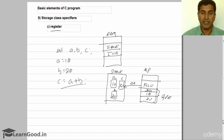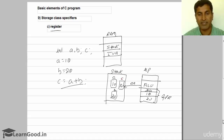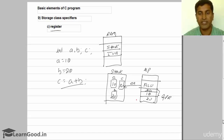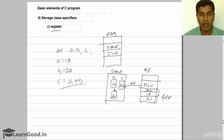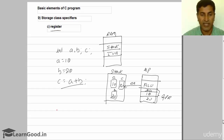Now, instead of storing the variable inside random access memory — that is, in the stack area or initialized variable area — why not store it directly into a GPR? That is, if I declare int a, b, c, the memory allocation shouldn't take place inside the stack area; it should get allocated directly inside the GPR. For doing that, C language provides a keyword called register.